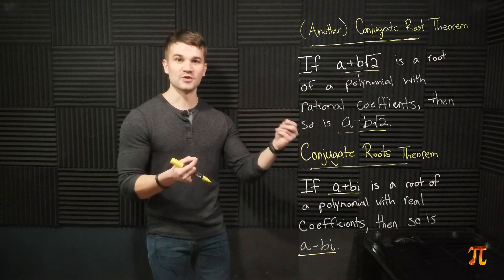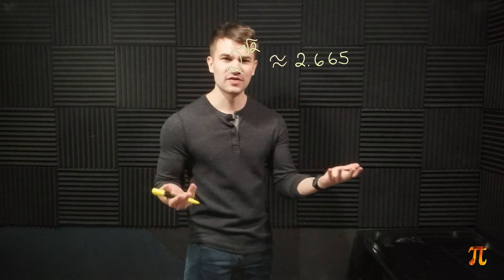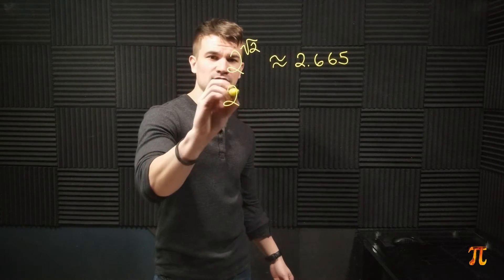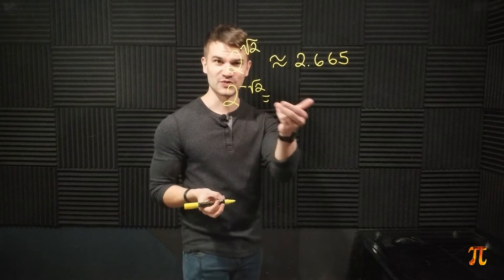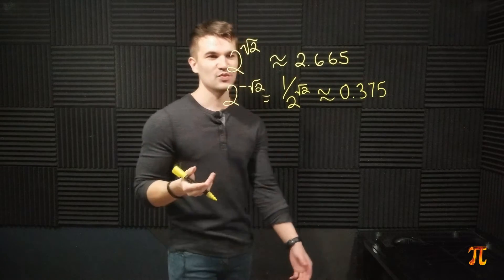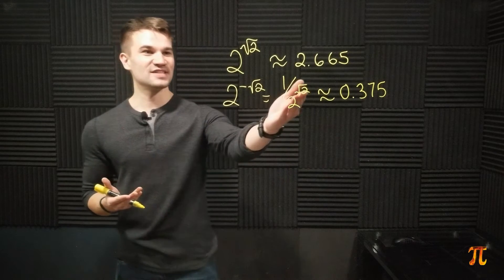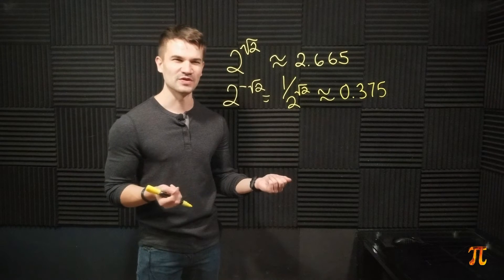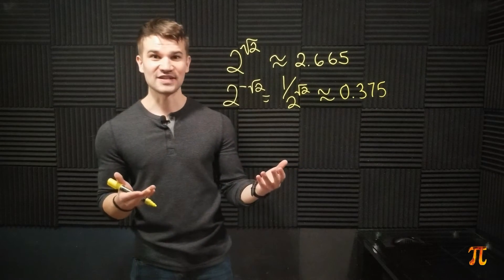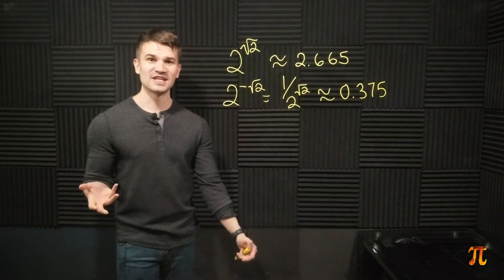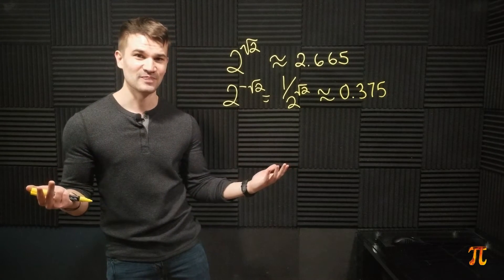But the overall far-reaching result we have with i and negative i does not hold for root 2 and negative root 2. For example, 2 to the square root of 2 is approximately 2.665, and 2 to the negative square root of 2 is around 0.375. These are multiplicative inverses, but they don't have that same conjugate relation. In fact, switching root 2 to negative root 2 in every instance of an algebraic expression will not result in another expression that is still true — this is because 2 to the root 2 is actually transcendental.